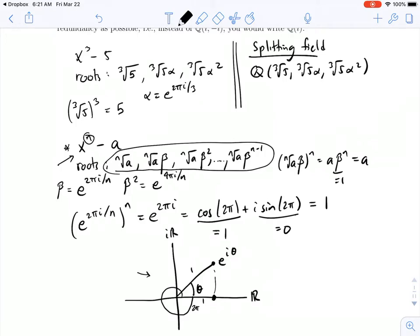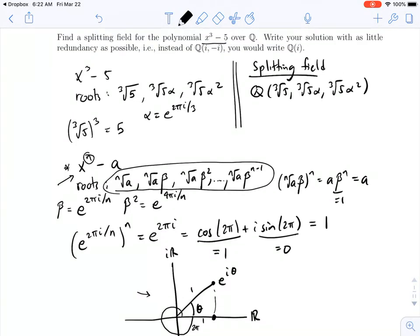Okay, but if I'm trying to be as efficient as possible, as little redundancy as possible, then it feels a little redundant writing cube root of 5 all over the place. Once I have the cube root of 5, I don't need to write it again, as long as I have the alpha around.